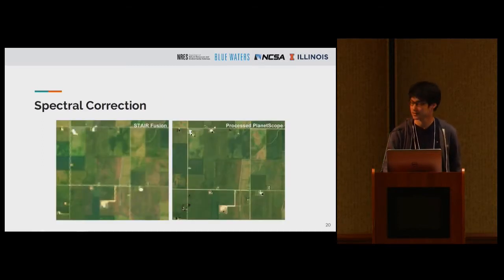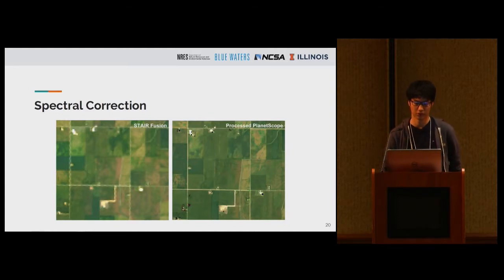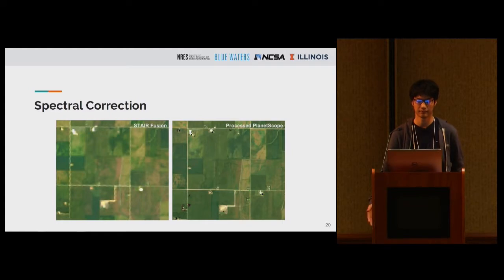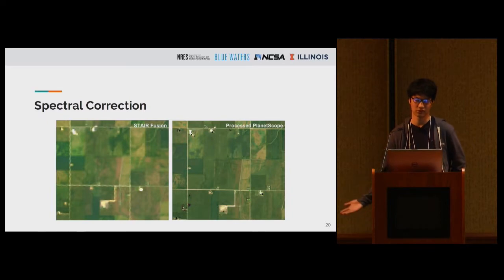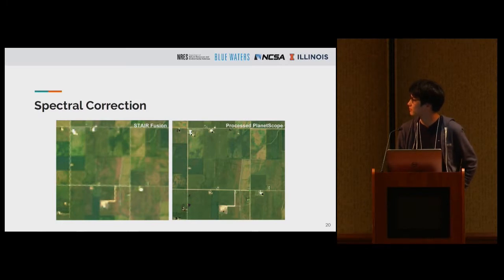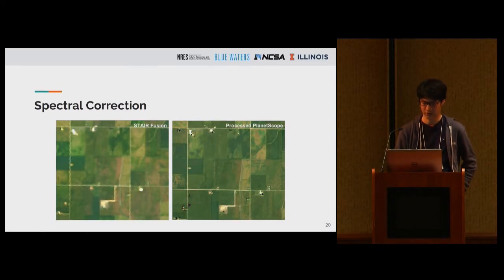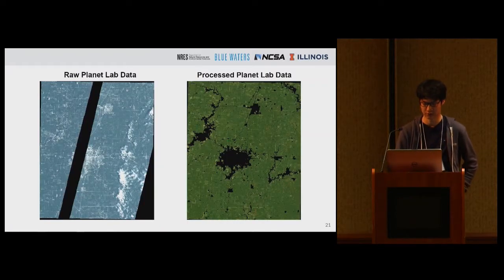This is a demonstration of the spectral response correction. We match the histogram of the Planet Labs dataset — specifically the bottom-of-atmosphere reflectance dataset — to the histogram of StarFusion. The two images may look similar on the projector, but they actually have very different resolutions while sharing the same spectral profile. This is a demonstration of the raw dataset versus the processed, agricultural-use-ready dataset.